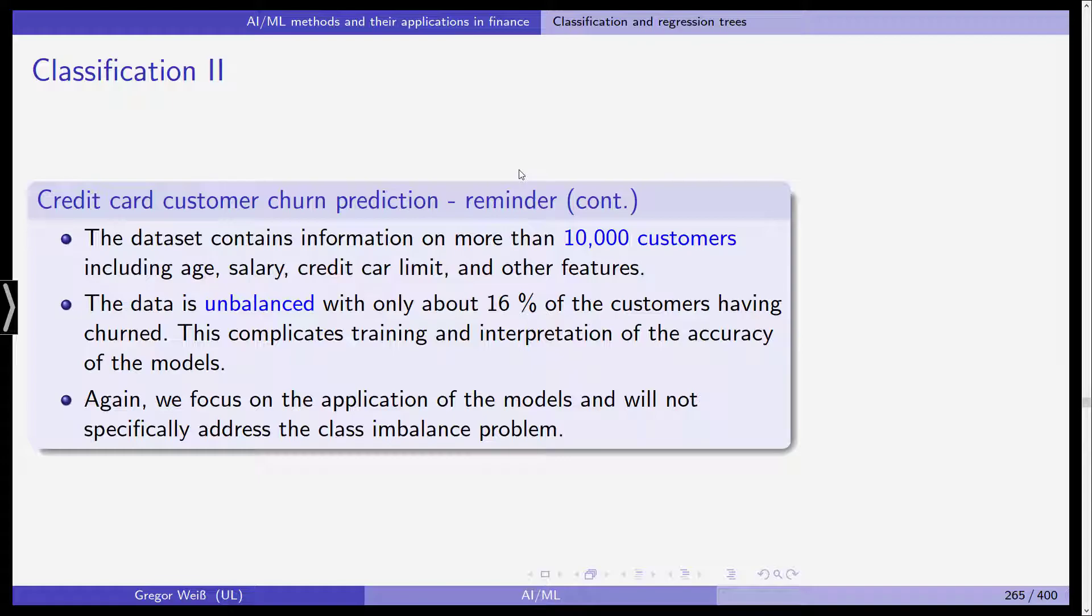We've already talked about this class imbalance problem. This led to the fact that in the previous lecture where we used support vector machines and k-nearest neighbor models, the accuracy wasn't perfect because of the few observations we have where customers actually terminated the contract.